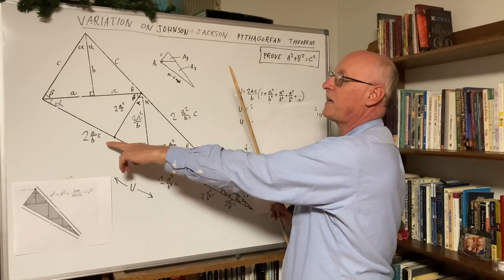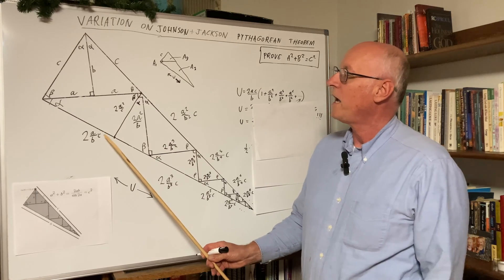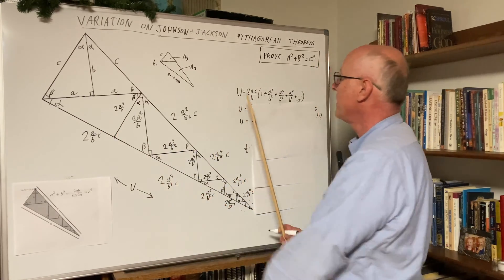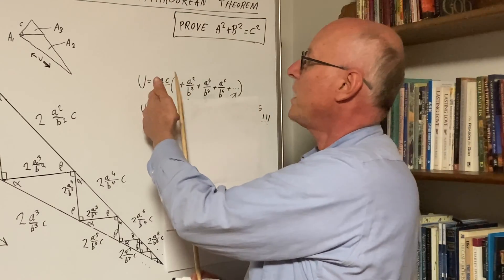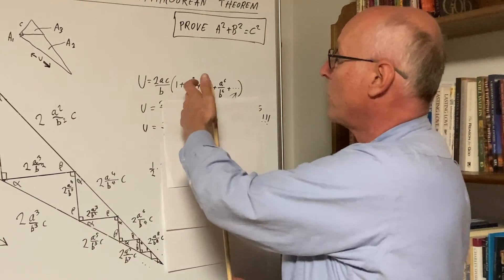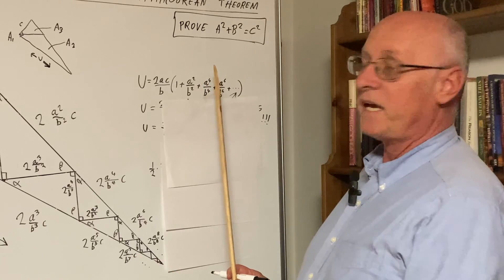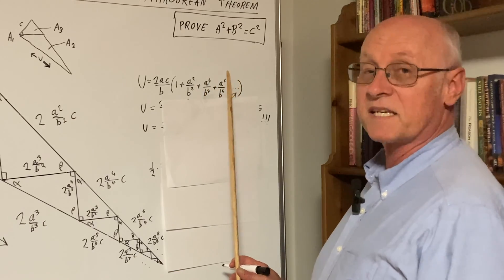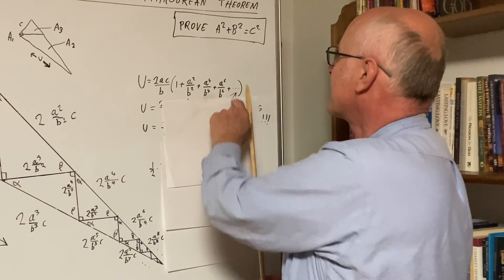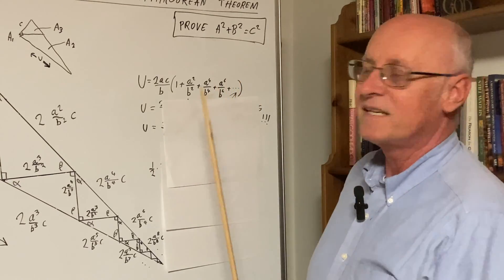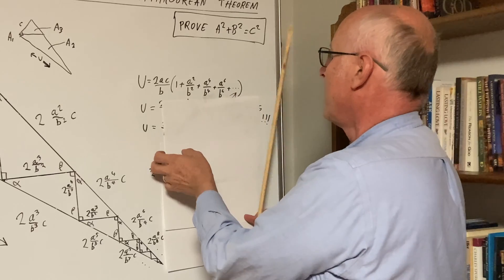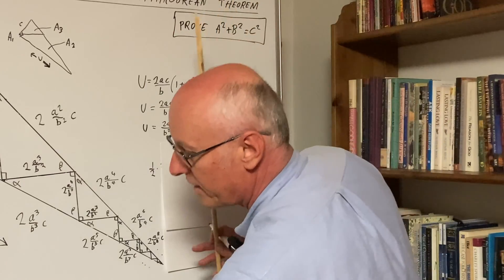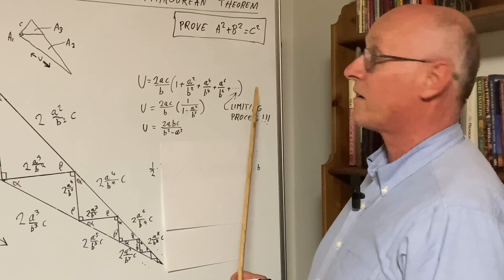Guess what? We're going to factor out the 2ac over b out of all of them. So it looks like this, 2ac over b, and then we get 1 plus a squared over b squared, plus a4 over b4, plus a6 over b6. Notice, and it's then plus dot, dot, dot. This is an infinite process. This is a limit, a limiting process. Right here is a limit.